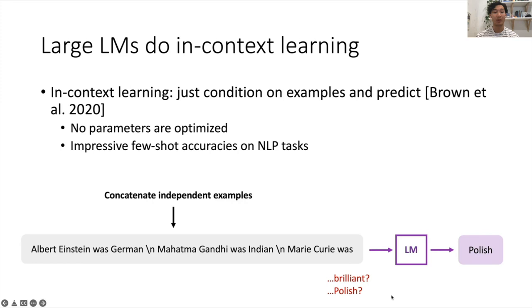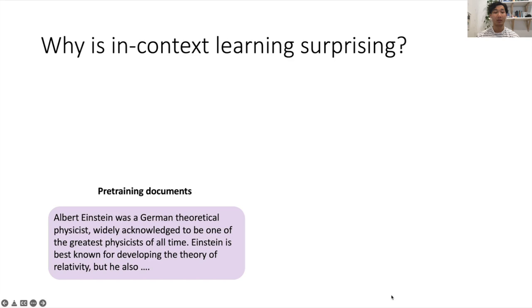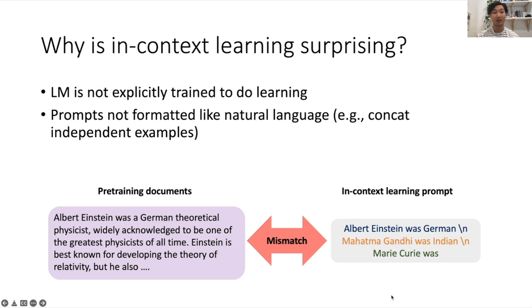So why is this surprising? During pre-training, the language model is trained to predict the next token. It's not explicitly trained to do learning from examples, and in-context learning prompts are not formatted like natural language. They concatenate independent examples of a task together, so there's a distributional mismatch between documents and prompts.